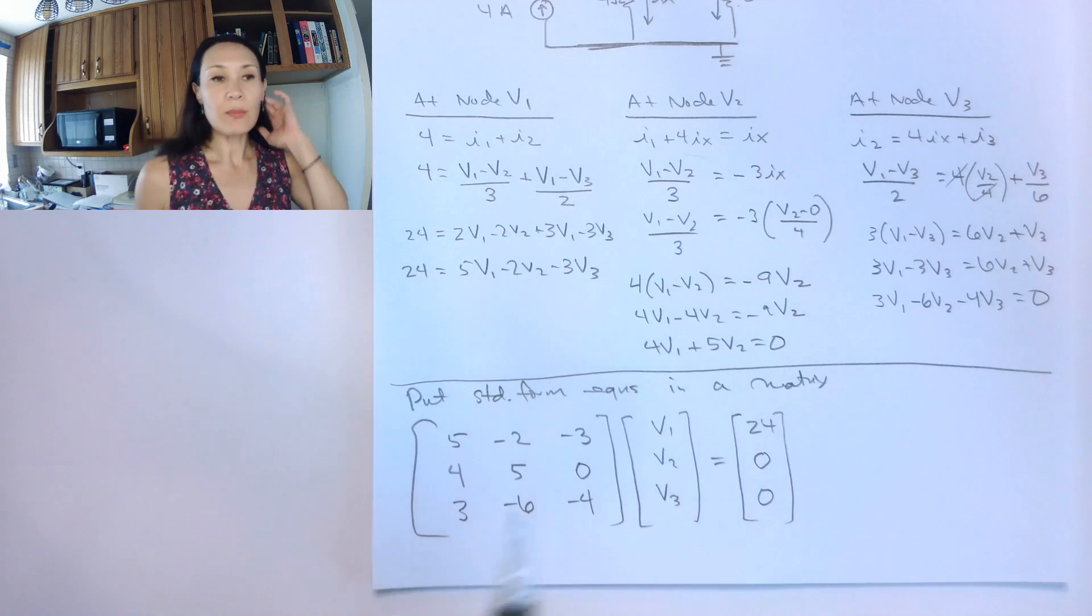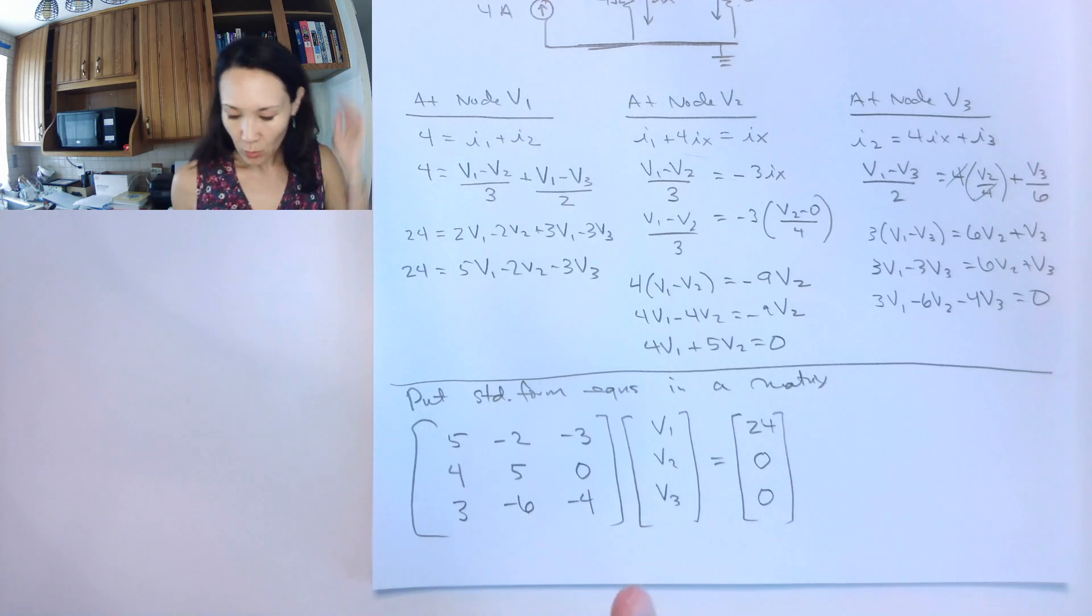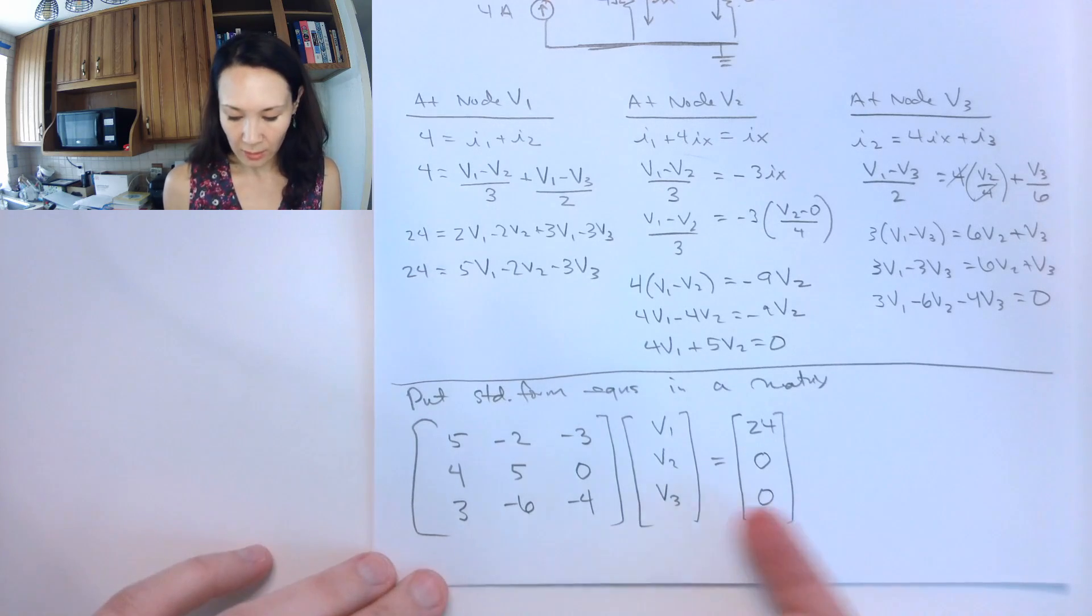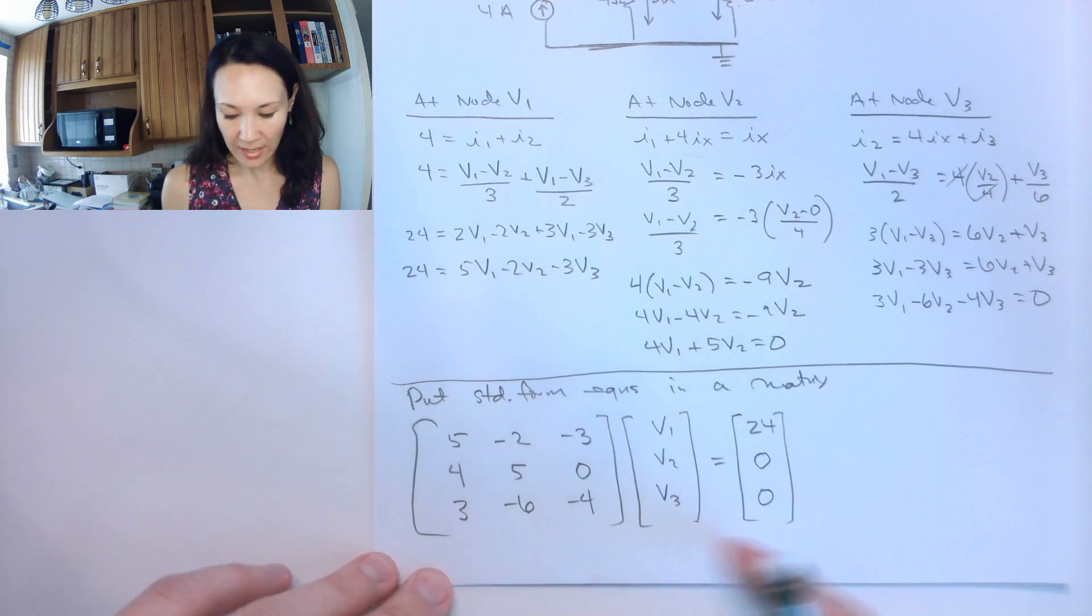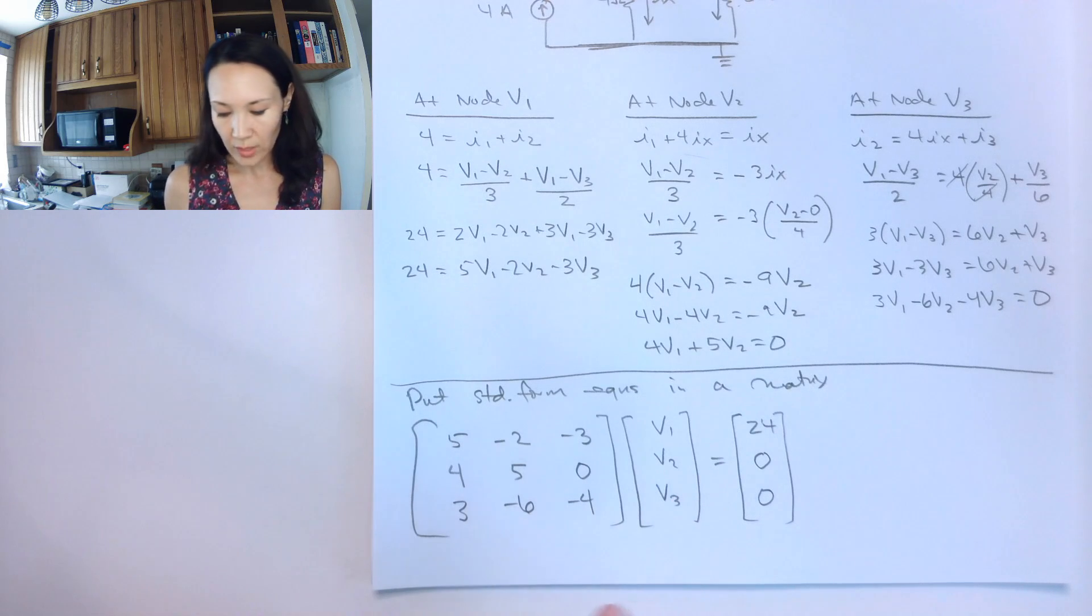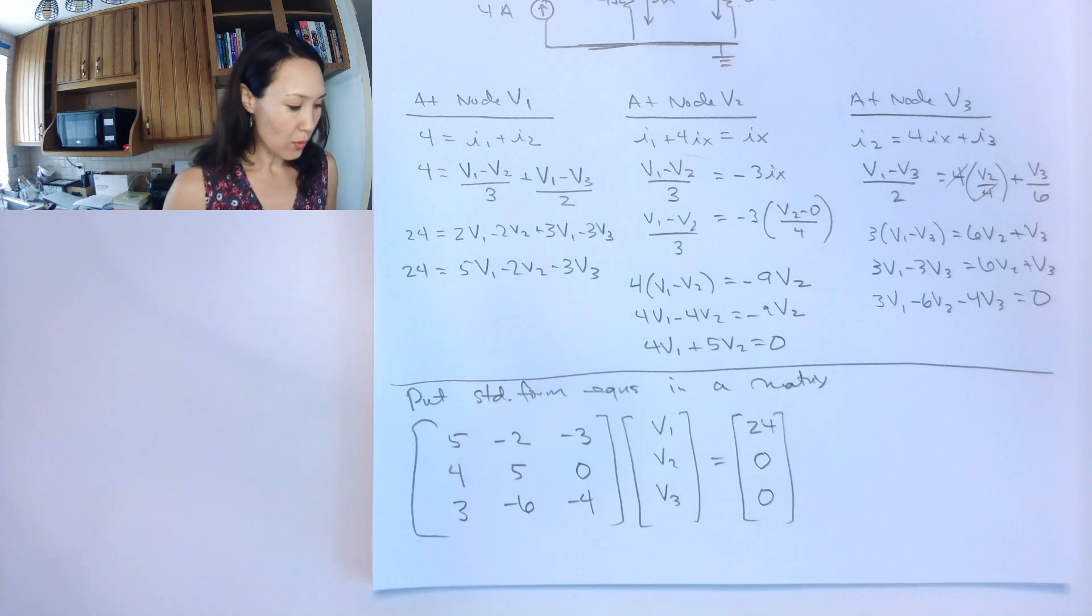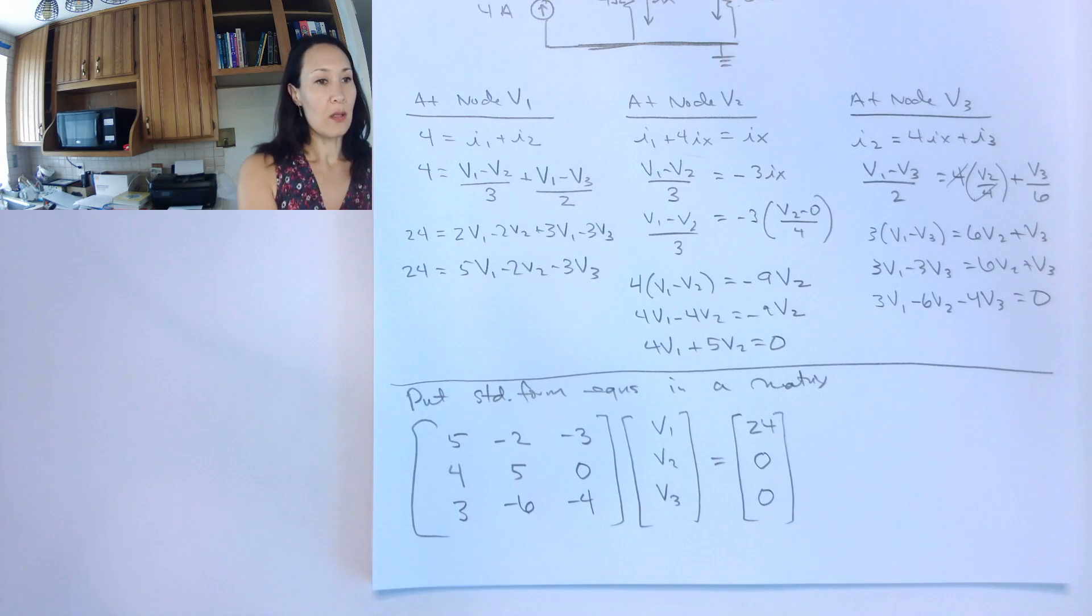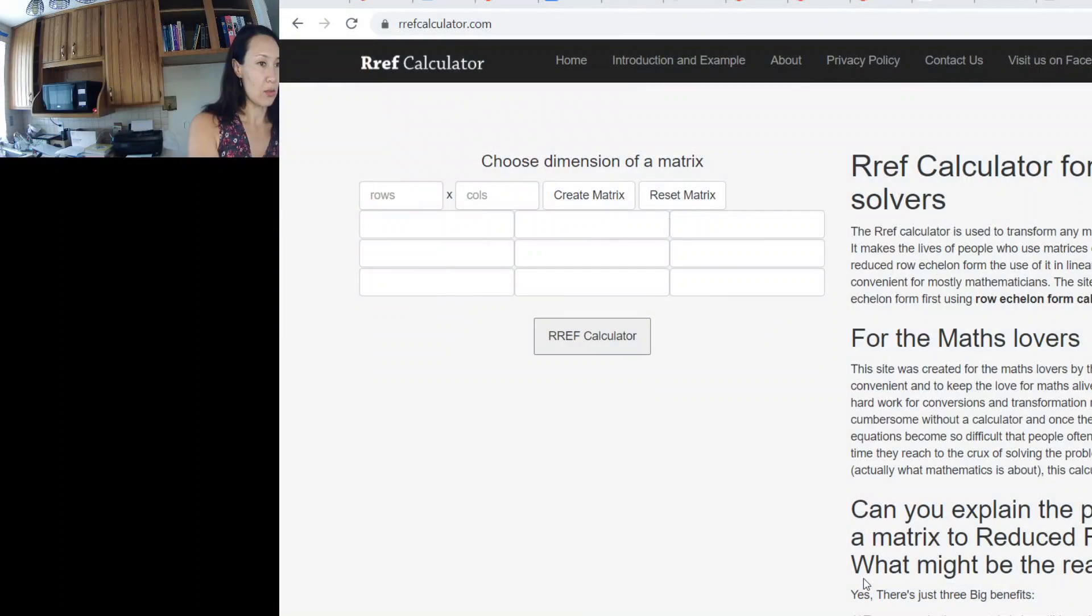Now, we've got a couple options at this point. We can row reduce this matrix. We can augment this with our kind of answer vector, row reduce it, and then solve for V1, V2, V3. You can also use Kramer's rule, which I can show you how to do that in another video. But just to kind of save us some time, let's use row reduce echelon form. I found a calculator online, so let me do a screen share.